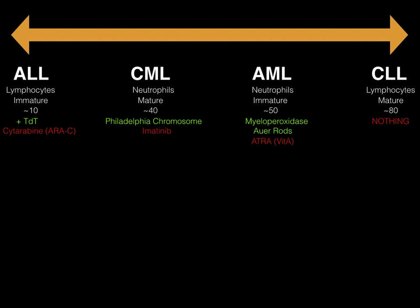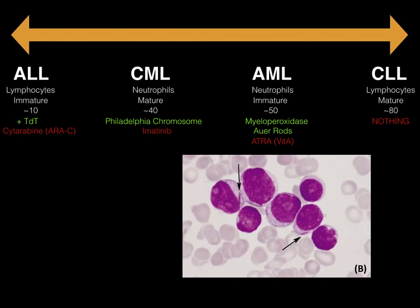The last thing to show you is Auer rods for AML — this is extremely high yield. If you see a patient presenting with symptoms of leukemia and they show you a smear with those flat little crystals in the cytoplasm of the cells, those are Auer rods. All you need to think when you see this is AML — it'll stain positive for myeloperoxidase, and you treat it with vitamin A or all-trans retinoic acid. They may show you this picture and ask which treatment is effective, or what else you expect to find in the smear — the answer is myeloperoxidase.